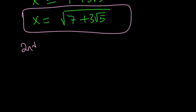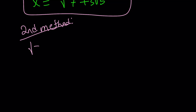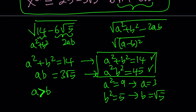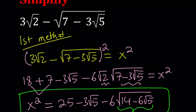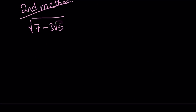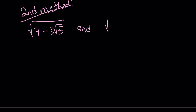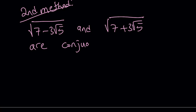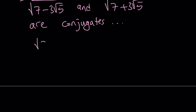Let's go ahead and talk about the second method. Notice that square root of 7 minus 3 root 5 is part of our expression — the original expression was 3 root 2 minus that. So square root of 7 minus 3 root 5 and square root of 7 plus 3 root 5 are conjugates, and we can add them and subtract them.